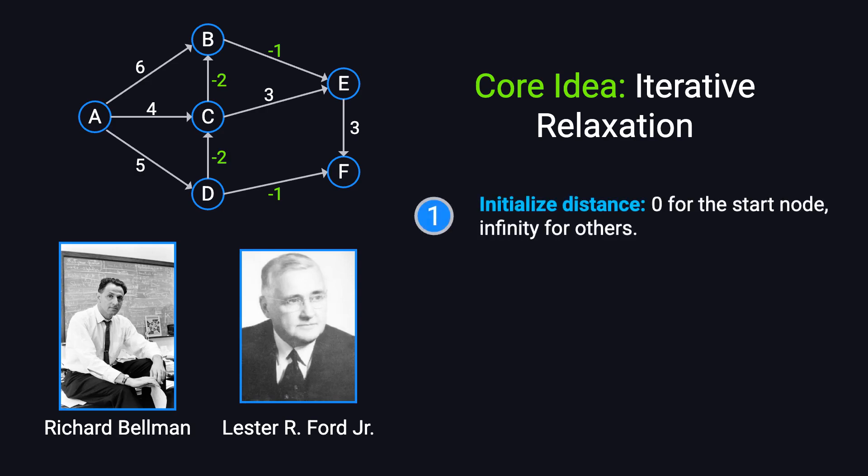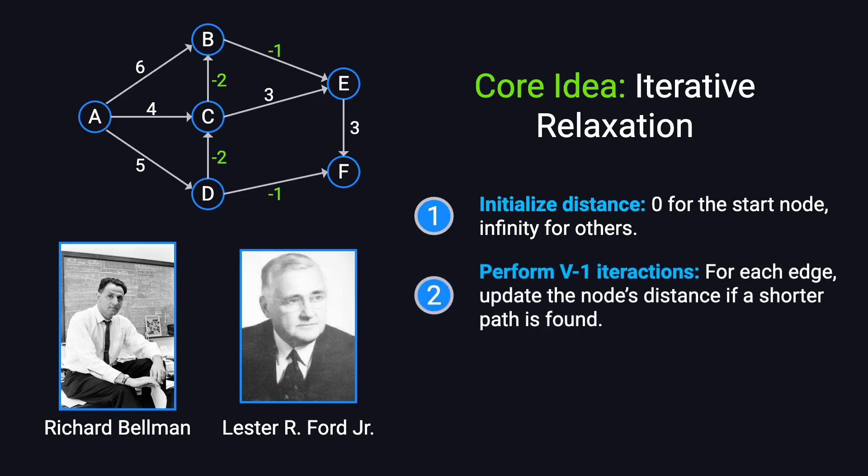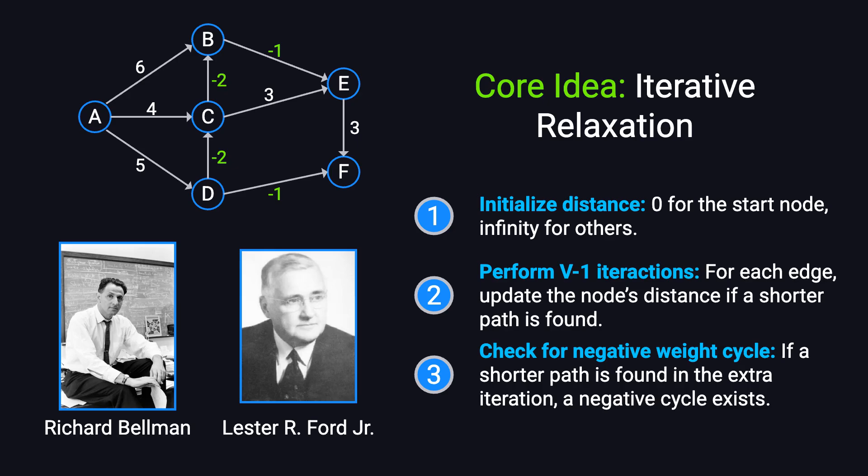Here's how it works. First, we initialize the distances — the starting node is set to 0, while all others are set to infinity. Then, we perform V minus 1 iterations, where V is the number of nodes, relaxing every edge in each iteration. If a shorter path to a node is found, its distance is updated — this process is known as relaxation. After V minus 1 iterations, all shortest distances are finalized, unless a negative weight cycle exists. To detect such cycles, we run one additional iteration. If any distance can still be updated, it means the graph contains a negative weight cycle, where paths can decrease indefinitely, preventing convergence.